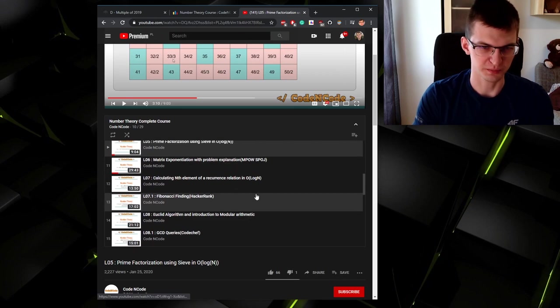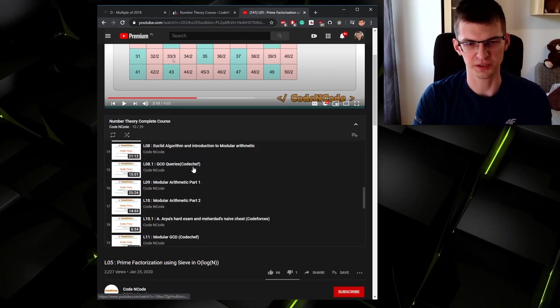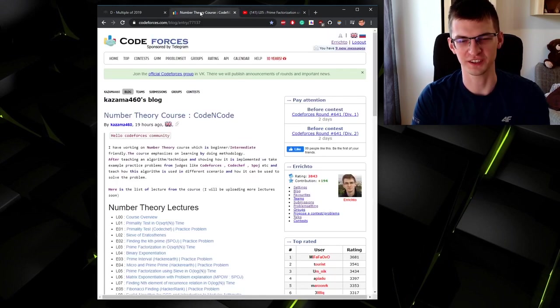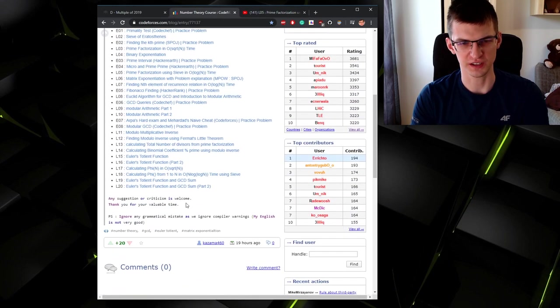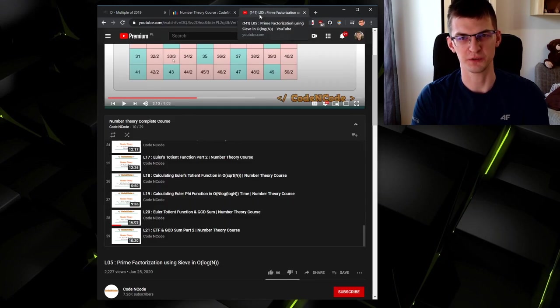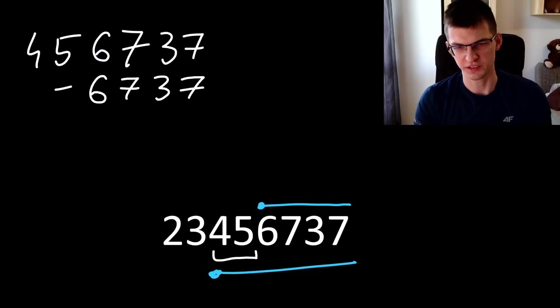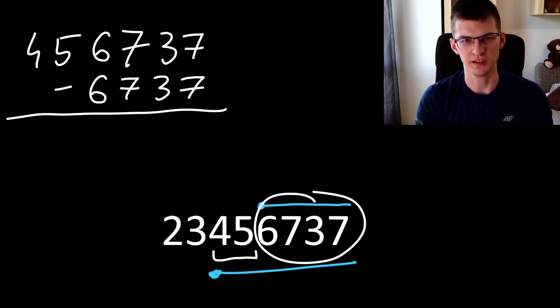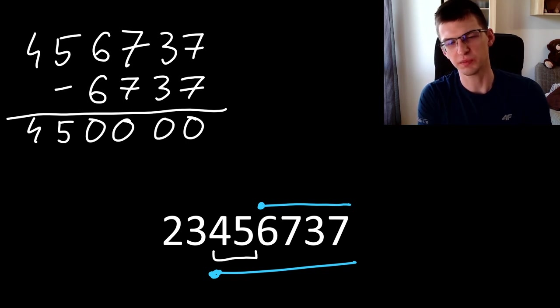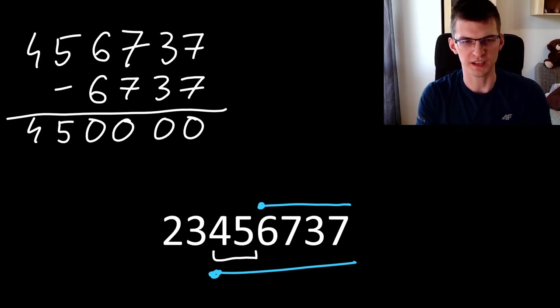He created a long playlist of topics needed in competitive programming in math, starting from prime sieve through matrix exponentiation to Euler's phi function or totient function. He also wrote on Codeforces what topics he covered, link will be somewhere in the description if you want to check him out. What about our difference of two suffixes? If we subtract 456 blah blah blah minus this shorter suffix 6737, we will get 0005 so we got a suffix multiplied by some power of 10.